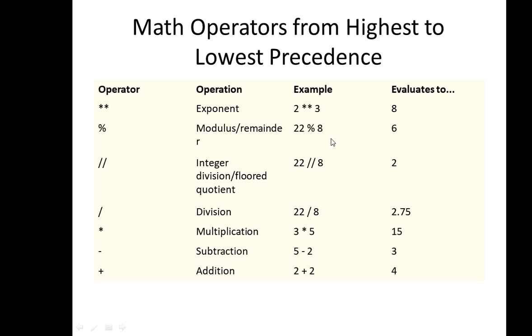Integer division: 22 double slash 8. It means integer division. If you divide 22 by 8, you get something like 2.456. With integer division, the quotient is rounded off to an integer value, which is 2.